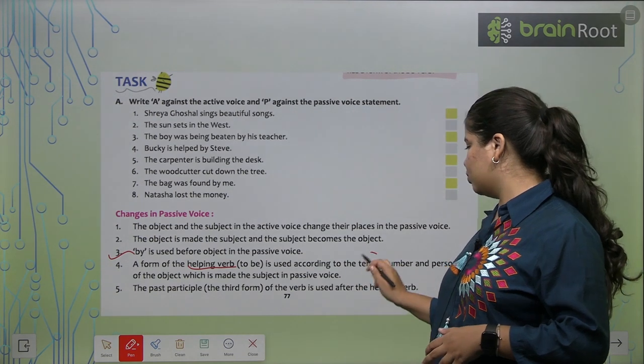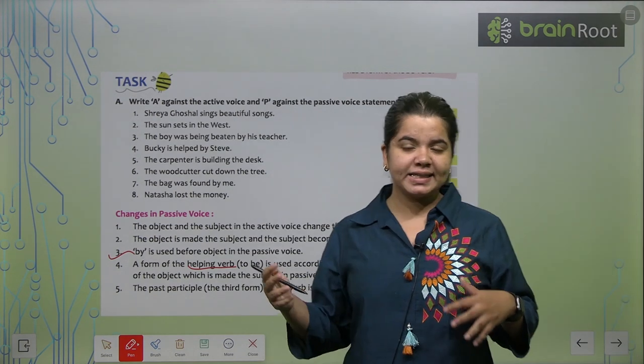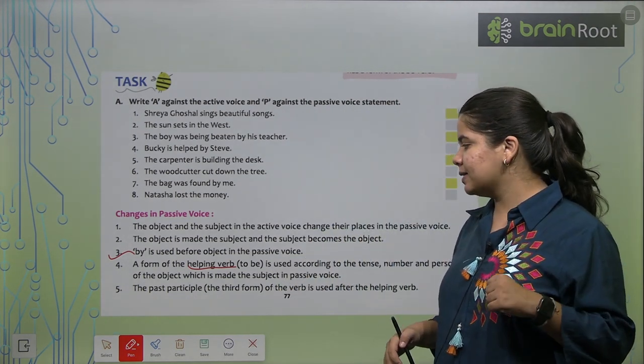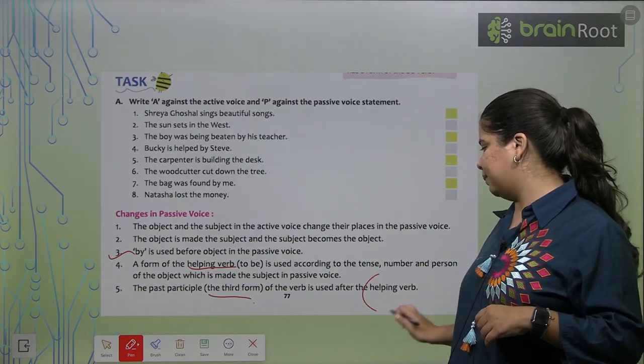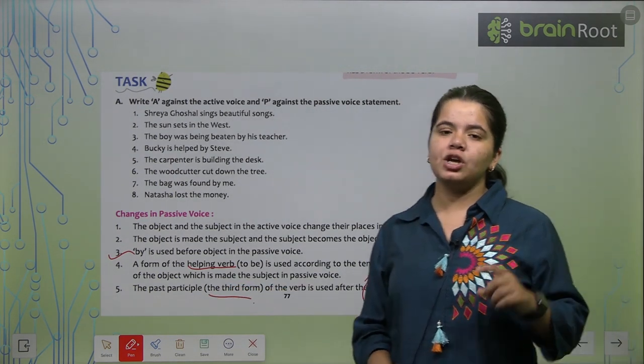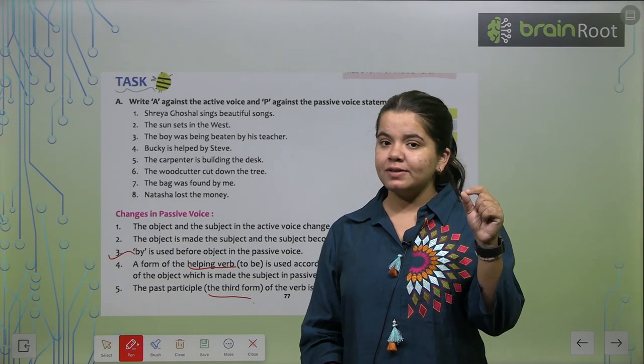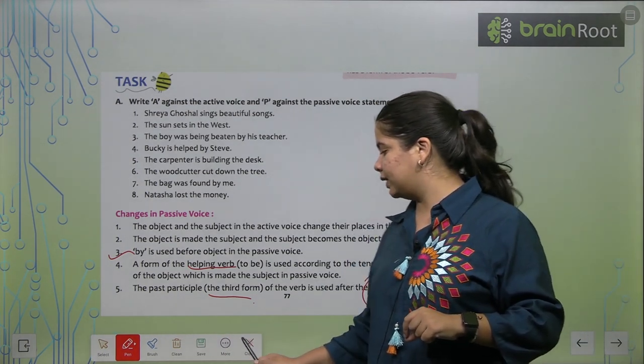So when you use your helping verb, you also have to keep in mind that the subject, you know basically what is its number. Or what do we have to see? What is its tense? And is it a person or a thing, we have to check that too. Next, the past participle, that is the third form of the verb is used after the helping verb. After helping verb, always third form is used in passive voice. After helping verb, which form is used? Third form.